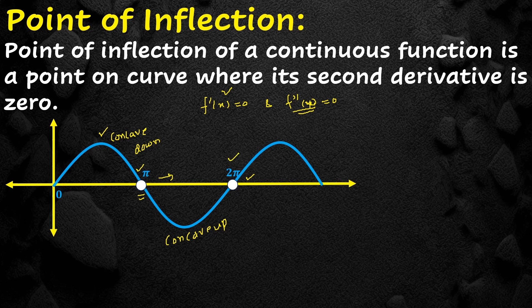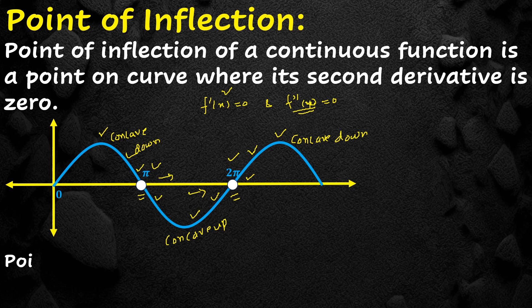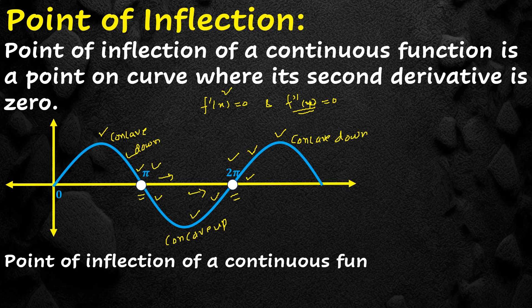The point where the concavity of the curve changes is called the point of inflection. At 2π, on the left the curve is concave up and on the right the curve is concave down, so 2π is also a point of inflection. Additionally, at π the function is decreasing on both sides, and at 2π the function is increasing on both sides — another criterion for points of inflection.